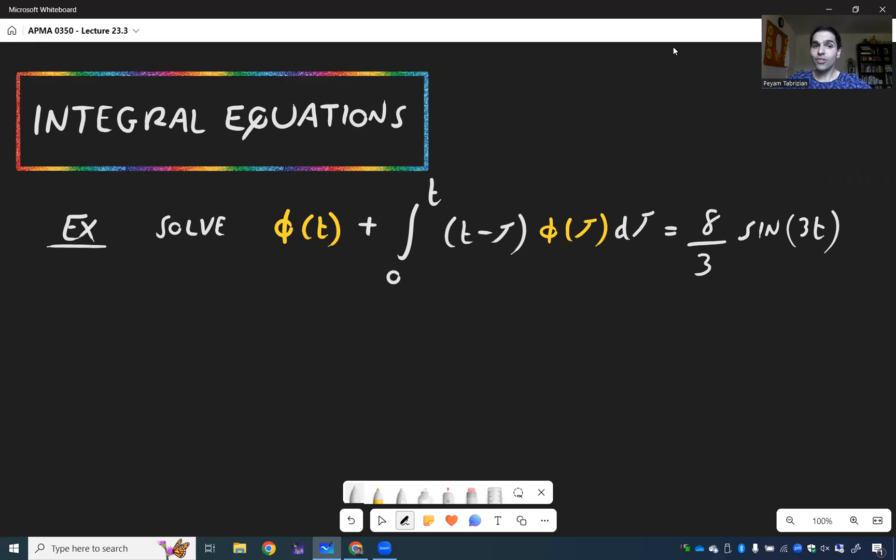For instance, let's try to solve φ(t) + ∫₀ᵗ (t-τ)φ(τ)dτ = 8/3 sin(3t).